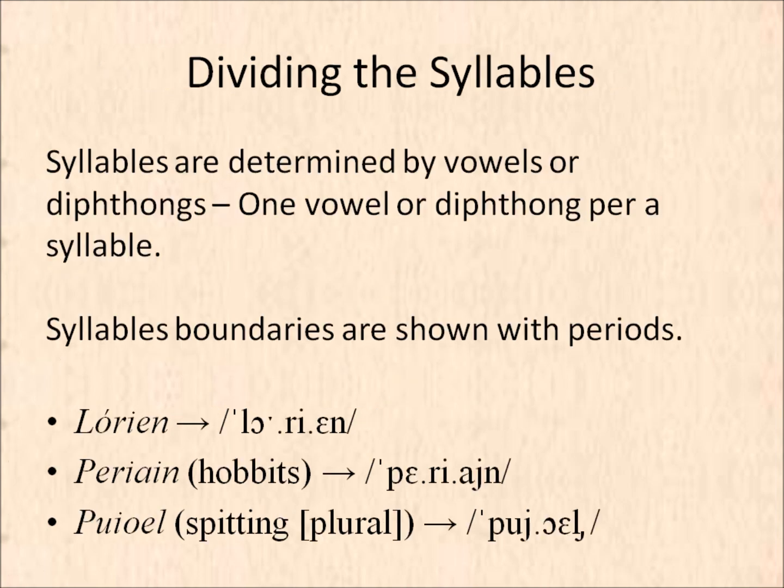Dividing the syllables. Syllables are determined by vowels or diphthongs — one vowel or diphthong per syllable. The syllable boundaries are always shown by periods. Some examples are Lórien — you'll notice that the I and the E are in separate syllables — and Periën, where the I and the EN are also separate syllables.